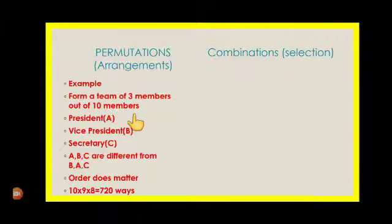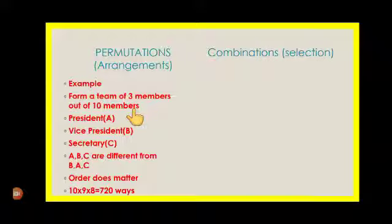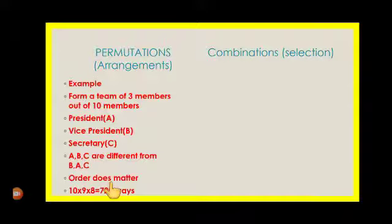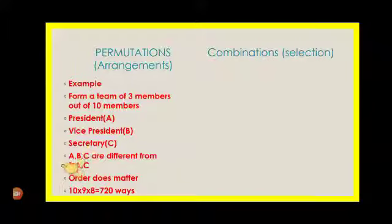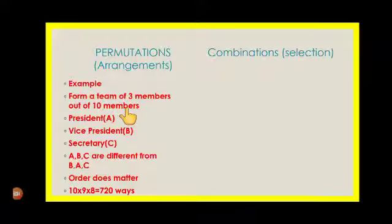But usual permutations, you have 3 boxes out of 10 members — say members A, B, C, D, E, F, G, H, I and one more — that is 10 members. The number of ways we get is 720 ways. For example, A, B, C arranged as A, C, B or B, A, C are all different arrangements, so here order does matter.